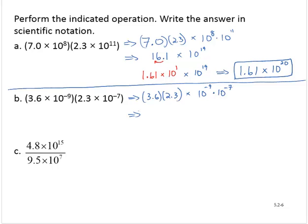3.6 times 2.3 is 8.28, and let's see, 10 to the negative 9th times 10 to the negative 7th. So adding those exponents, that would be 10 to the negative 16th. And this is already in scientific notation, so we can stop right there.